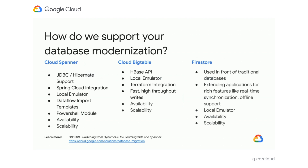We support database modernization with several tools and integrations. We integrate with industry standards like JDBC and Hibernate, and with popular frameworks like Spring Cloud. We provide tools for fast iterative development — for example, local emulators for Cloud Spanner and Bigtable so you can develop locally without provisioning cloud resources. And by moving to a cloud-native database, you also get built-in high availability, scalability, and integrations for monitoring and optimization.